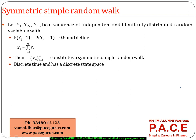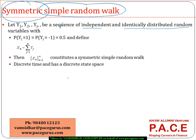When we talk about a symmetric simple random walk, it is a simple random walk but symmetric. How does symmetry work here? Let's say we have a series of independent and identically distributed random variables y1, y2, y3, and so on up to y_n — independent random variables that are identically distributed.